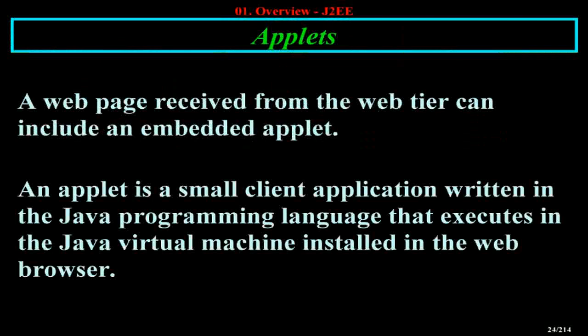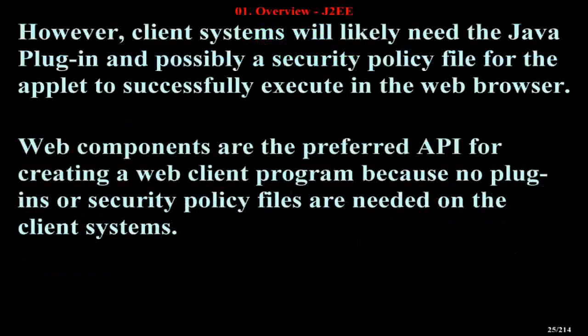A web page received from the web tier can include an embedded applet. An applet is a small client application written in the Java programming language that executes in the Java Virtual Machine installed in the web browser. However, client systems will likely need the Java plugin and possibly a security policy file for the applet to successfully execute on the web browser.